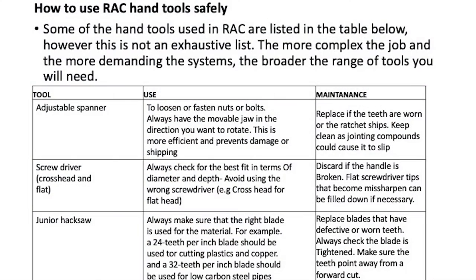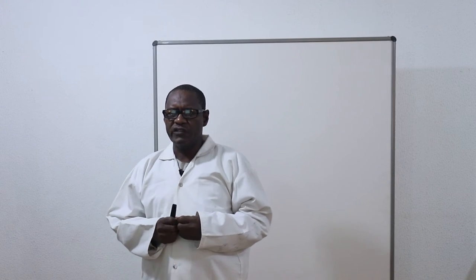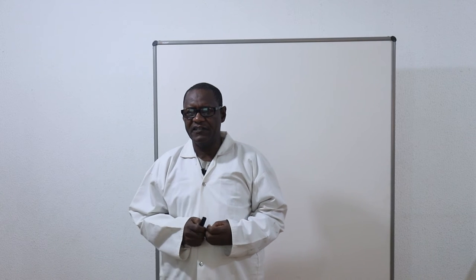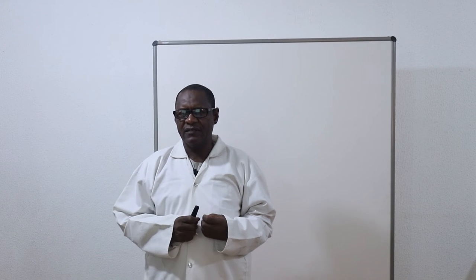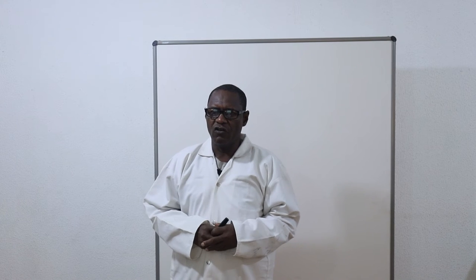How to use RAC hand tools safely. The hand tools include: one, the adjustable spanner — you definitely need an adjustable spanner for RAC work to loosen or fasten nuts or bolts. Always have the movable jaw in the direction you want to rotate; this is more efficient and prevents damage. Replace it if the teeth are worn out or the ratchet chips; keep it clean as jointing compounds could cause it to slip. Two, the screwdriver — you have cross-head or flat types; always check for the best fit in terms of diameter and depth, and avoid using the wrong screwdriver.